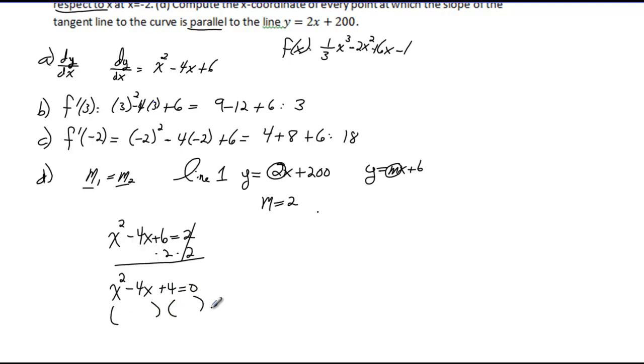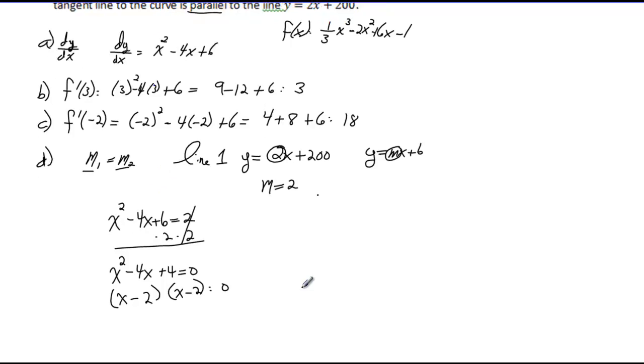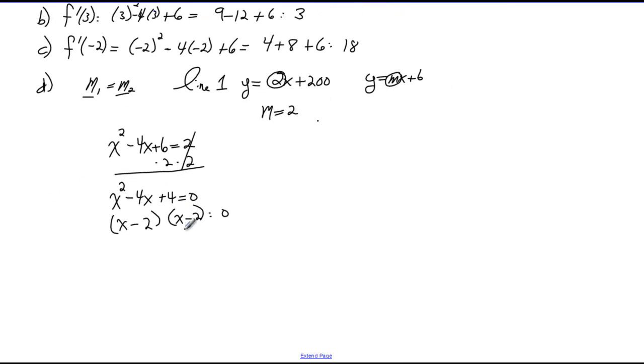We factor this: x and x, bring down the first sign negative, then another negative. Factors of 4 that give you negative 4 are 2 and 2. So (x minus 2)(x minus 2): x times x is x squared, minus 2x minus 2x gives minus 4x, negative 2 times negative 2 gives positive 4. Setting this equal to 0, we get x equals 2.